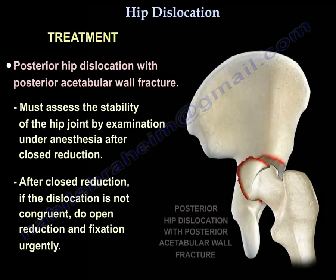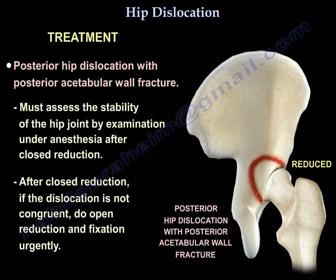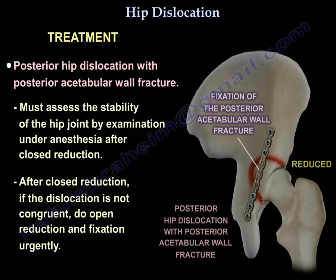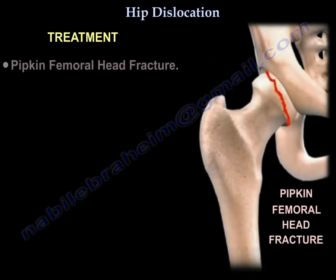For posterior hip dislocation with posterior wall fracture, assess the stability of the hip joint by examination under anesthesia after closed reduction. If the reduction is not congruent, perform open reduction and fixation urgently. Here is an example of fixation of the acetabular fracture, and here is an example of fixation of the Pipkin femoral head fracture.